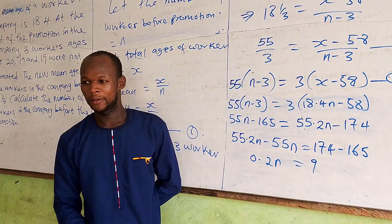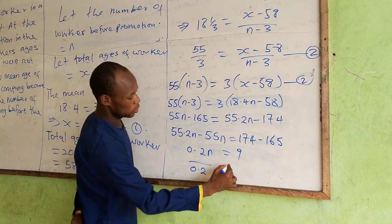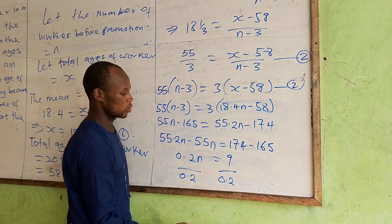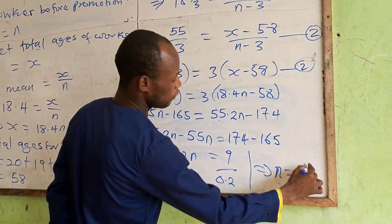Is that okay? Good. So divide through by 0.2. This implies that n will be equal to 45.